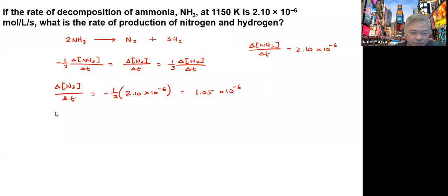Now for the other one, we have 1 over 3 delta H2 over delta t. That equals negative 1 half times 2.1 times 10 to the negative 6. We want to leave this on one side, so we multiply both sides by 3. When we get that, the value we get—2.1, half of this one times 3—we get around 3.15 times 10 to the negative 6.